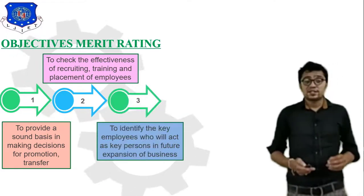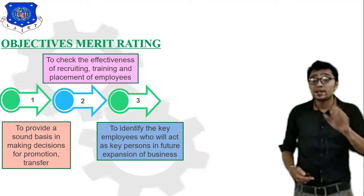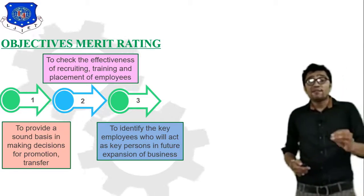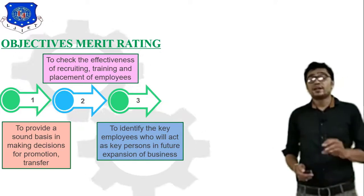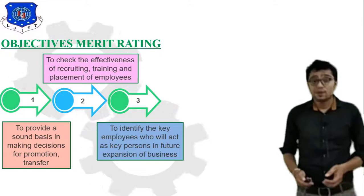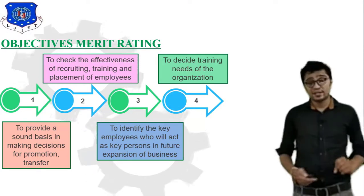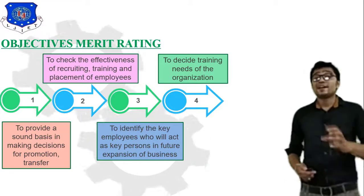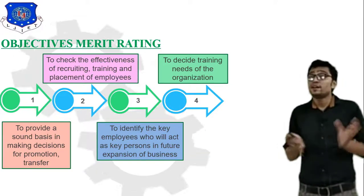The third objective is to identify key employees who will act as key persons in future expansion of the business. The fourth objective is to decide the training needs of the organization, because it is a competitive market. Based on evaluation of the worker, salary, wages, and incentive structures are decided.